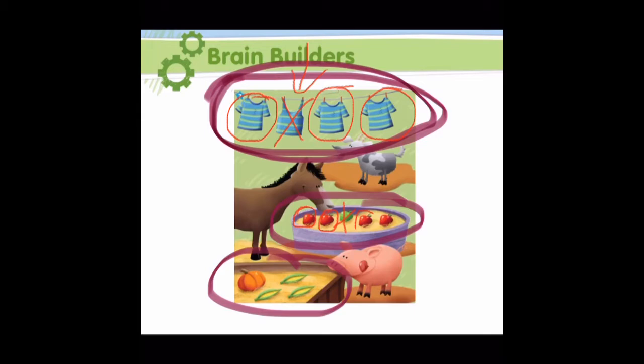Let's take a look at the objects near the pig. We have three corn and one pumpkin. The pumpkin is different, so we are going to put an X on it. And we are going to circle the rest of the vegetables. Good job.